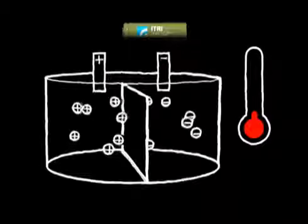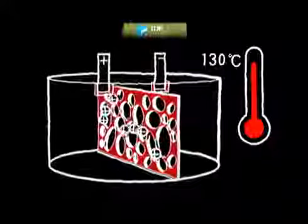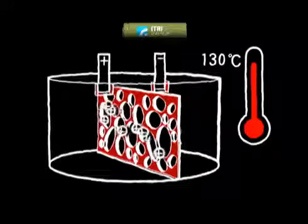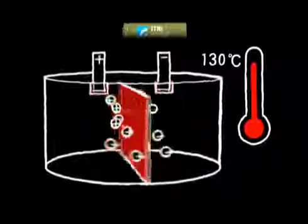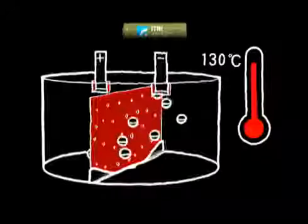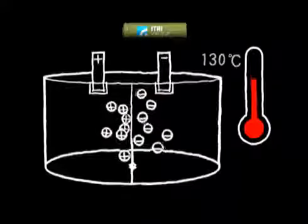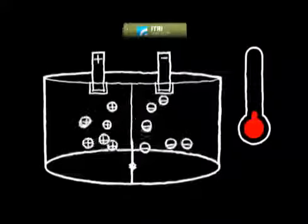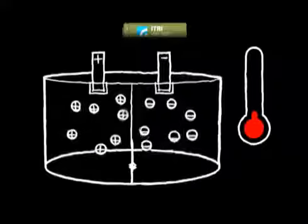When a lithium battery's internal temperature exceeds 130 degrees, Stoba automatically produces a shutdown reaction, isolating ion movement inside the battery. As internal chemical reactions cannot continue, the temperature cannot continue to rise.